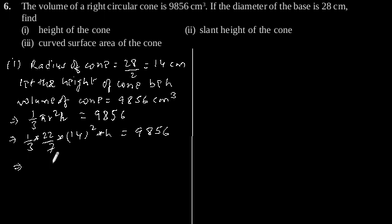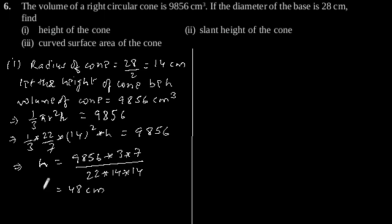This implies H is equal to 9,856 × 3 × 7 divided by 22 × 14 × 14, which gives value of H as 48. So the height of the cone is 48 cm.